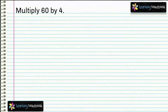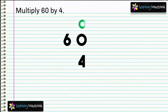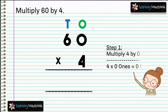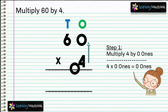To multiply, first let's write the numbers in columns. We will multiply in two steps. In step one, multiply 4 by 0 ones — 4 into 0 ones equals 0 ones — so we write 0 at the ones place in the answer.